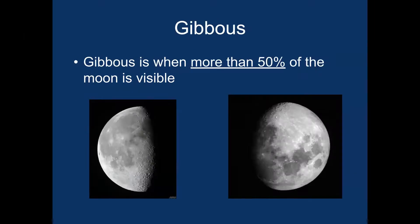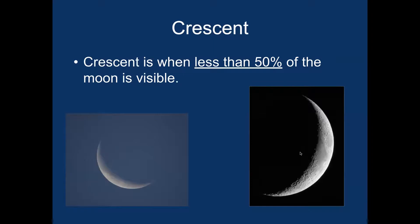There's another term used with phases: gibbous. Gibbous is used when there is more than 50% of the moon visible — that's over half. So in the image, these phases are gibbous. A crescent describes when less than 50% of the moon is lit up or visible. Here we have less than 50%, and over here less than 50% — so the word crescent describes that condition at those particular phases. And then we have a half moon, which they actually call a quarter moon.